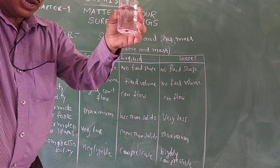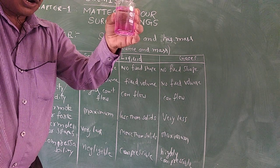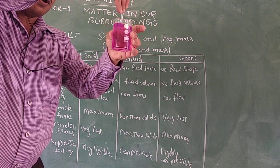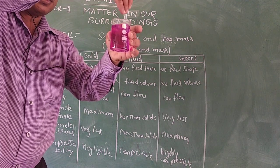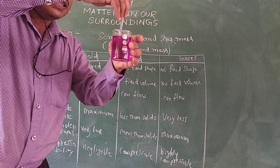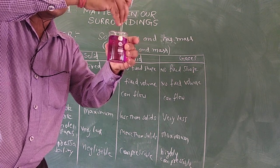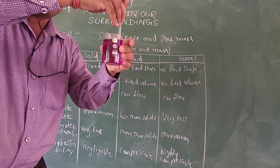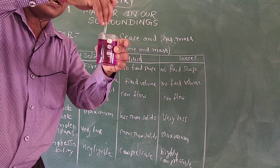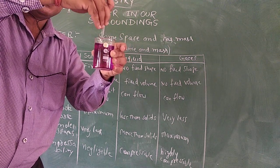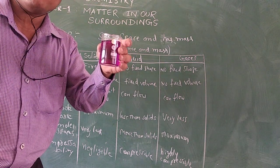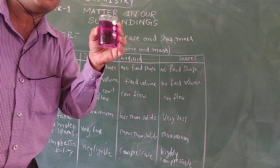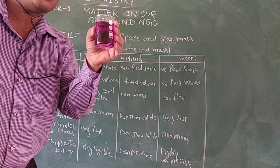Slowly as it dissolves, observe what happens — the total solution is going to get a pink color. We can understand here that in between the water molecules, some spaces are present. When I add potassium permanganate, these particles went into those spaces. This activity is an example of diffusion.